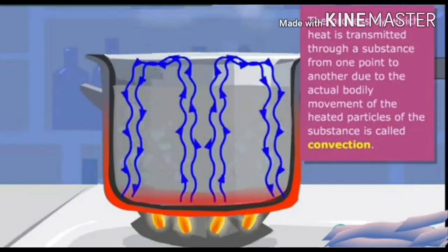Let us study convection in water. Water transfers heat by the process of convection. In order to heat water, we keep the vessel containing water over a gas burner. When a beaker containing water is kept over a burner, water at the bottom of the beaker gets heated, expands and becomes lighter. This hot water rises upwards and carries heat along with it.